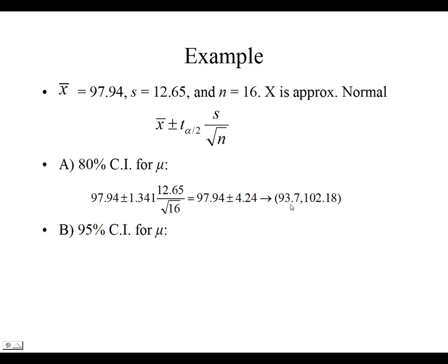The left bound or the lower bound is our point estimate minus this. We're going to do the subtraction first. And that's going to come out to 93.7. When we add it, it's going to be 102.18.